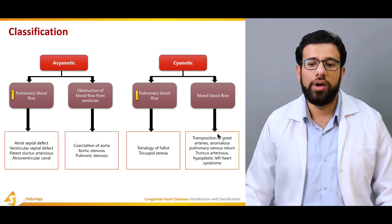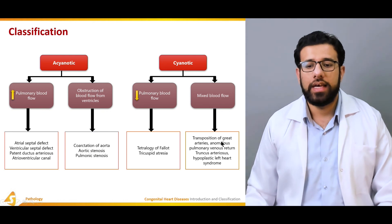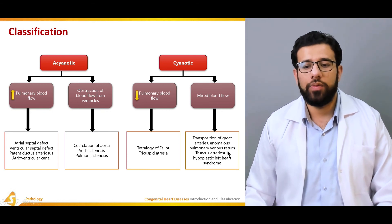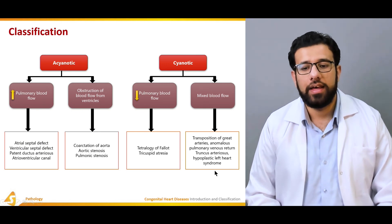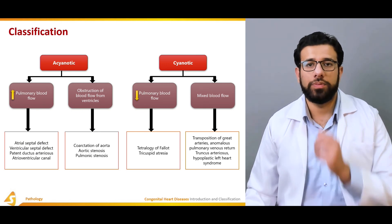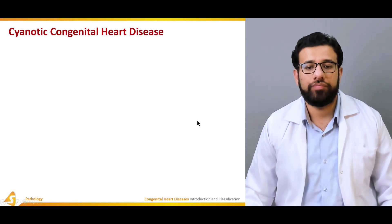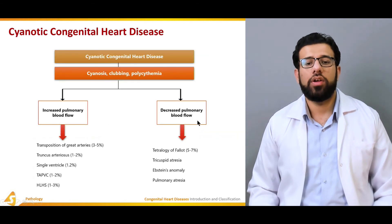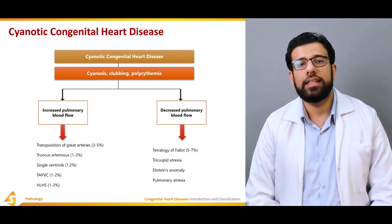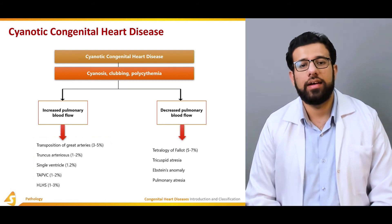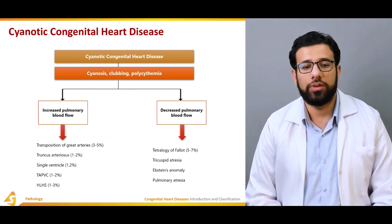In the mixed blood flow category, conditions include transposition of the great arteries, anomalous pulmonary venous return, truncus arteriosus, and hypoplastic left heart syndrome. The hallmarks of cyanotic congenital heart disease are clubbing, polycythemia, and cyanosis.